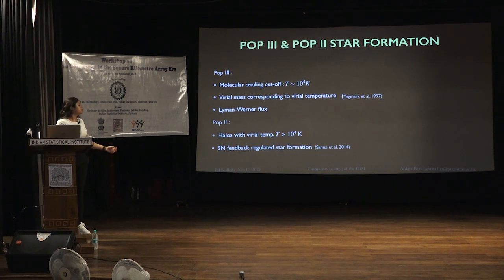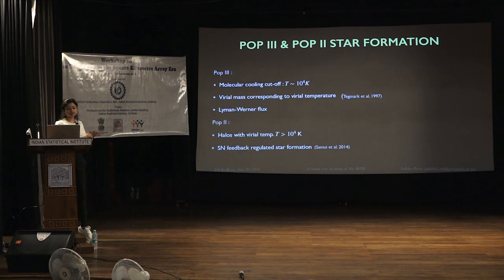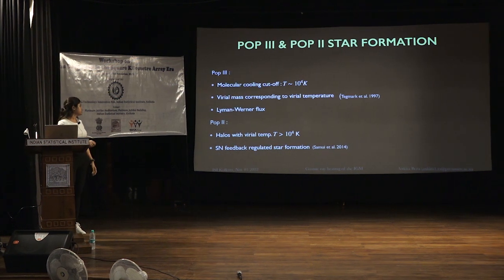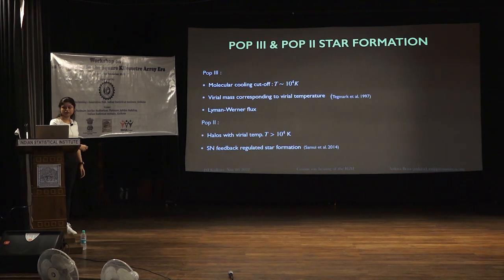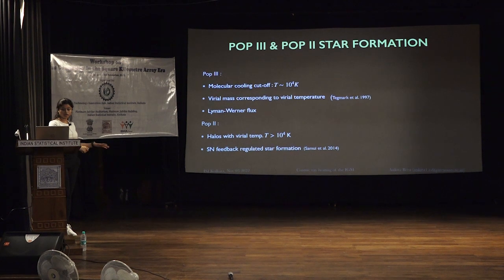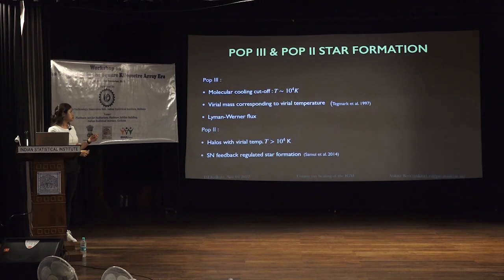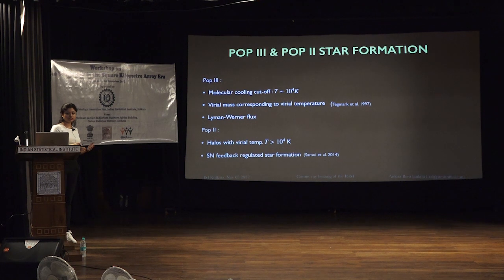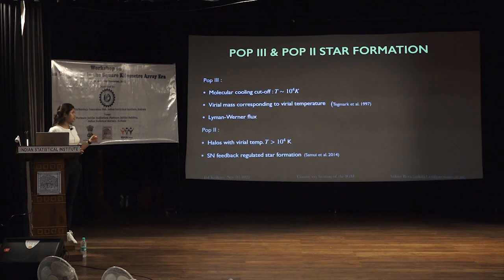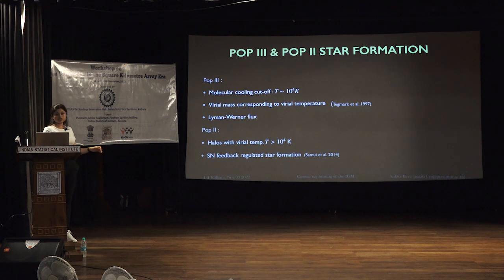The minimum mass required to cool the gas and form the star is given by the virial temperature of the halo. With the formation of these first stars, along with the Lyman-Alpha photons, Lyman-Werner photons also get generated, and that acts as a negative feedback to first star formation.